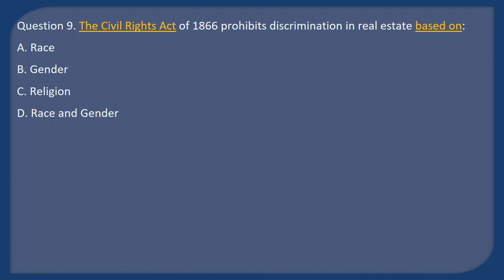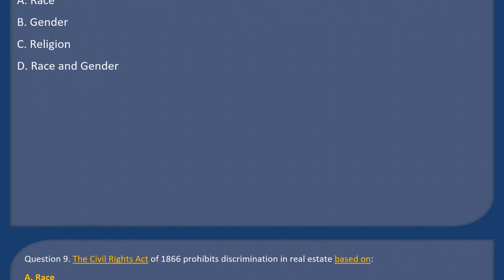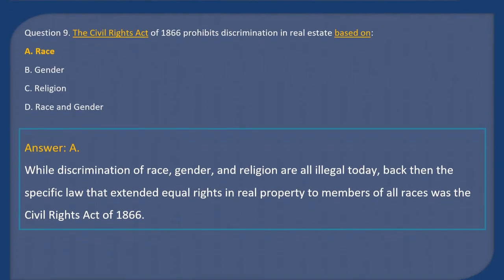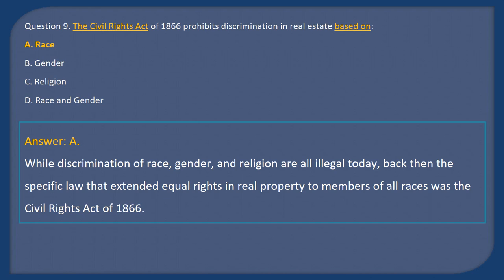Question 9: The Civil Rights Act of 1866 prohibits discrimination in real estate based on: A) Race, B) Gender, C) Religion, D) Race and gender. Answer: A. While discrimination based on race, gender, and religion are all illegal today, the specific law that extended equal rights in real property to members of all races was the Civil Rights Act of 1866.